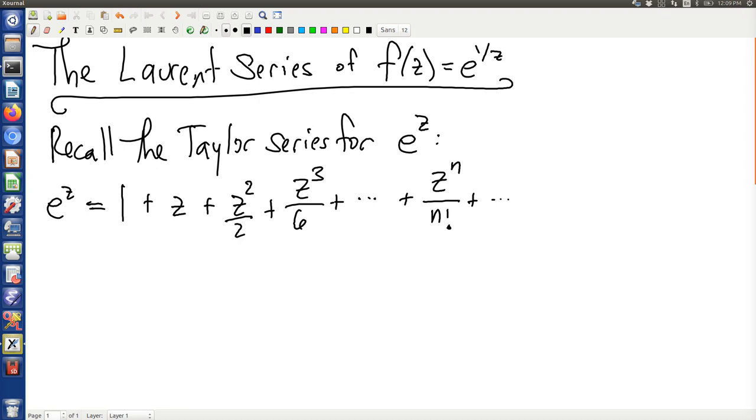In order to get the Laurent series for e to the 1 over z, you simply just put in the 1 over z.